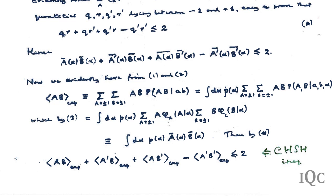For any four real quantities Q, R, Q', R' lying between minus one and plus one, there is a very trivial geometrical statement that this particular combination must be less than or equal to two. So if I take the averages over the same state, that must be less than or equal to two. From conditions one and two, the experimental value of this is given by the integral of d-alpha. By assumption two, the state distribution is independent of settings. By assumption three, you can break up this probability again. So this is just given by this expression here — and now we're home because we've already proved the bound and simply integrate over alpha to get the CHSH inequality.